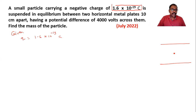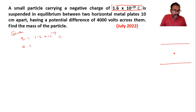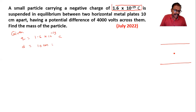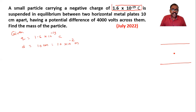The distance between the two plates is given. I can write small d for distance between the two plates: 10 centimeters, or we can write 10 into 10 raise to minus 2, or 0.1. The potential difference between the plates is 4000 volts.